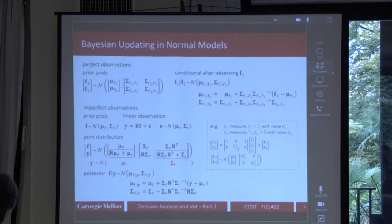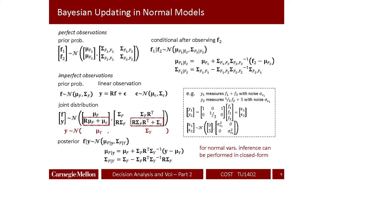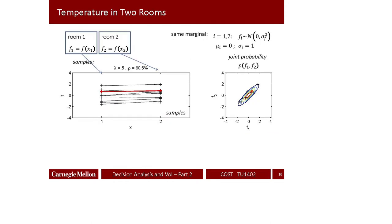In summary, when dealing with a normal model, the inference process reduces to simple linear algebra computations. The posterior is always Gaussian, and you just compute the updated mean vector and covariance matrix using closed-form formulas. Let me now use this to define the idea of a Gaussian process.